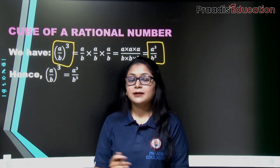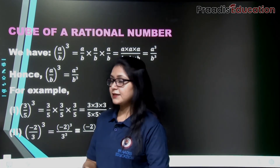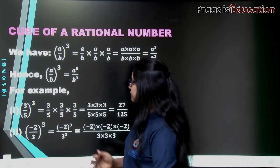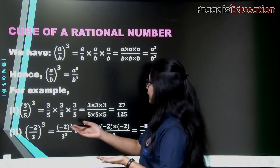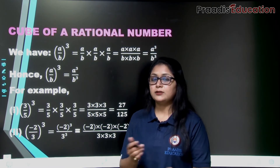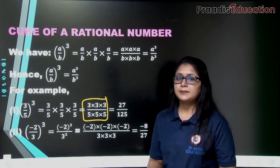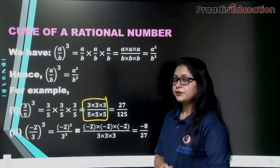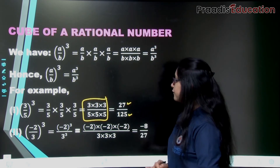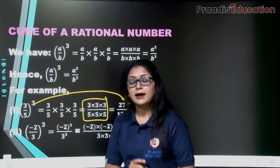Finding the cube of a rational number is so easy. For example, (3/5)³: we apply the formula. Cubing numerator and denominator separately — 3 cubed is 27, and 5 cubed is 125. So (3/5)³ = 27/125.